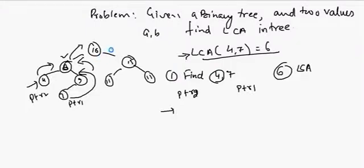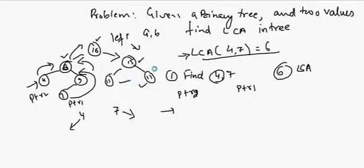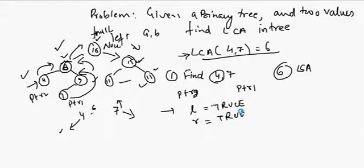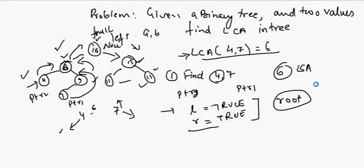We look successively on the left-hand side and right-hand side. At node 10, we start traversing looking for 7, but we won't find anything on that side, so at 10 we'll get null. At node 6, we find 4 on the left-hand side and 7 on the right-hand side. So L will be true — we found something on the left — and R will also be true. If both L and R are true, then the node under consideration, in this case 6, is our LCA.